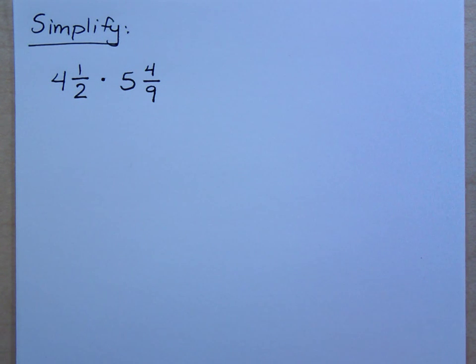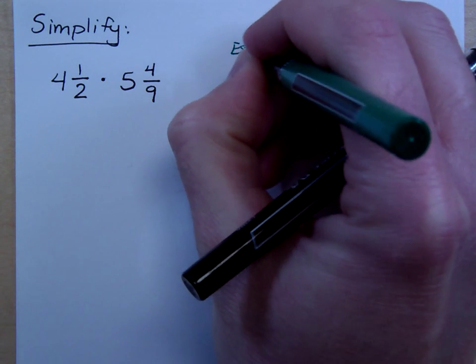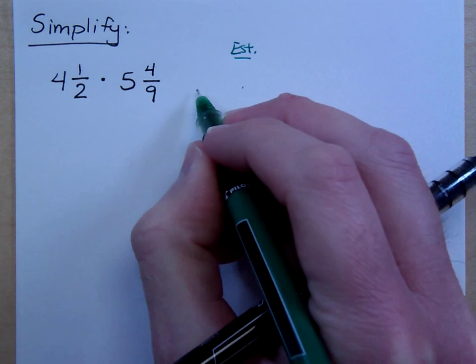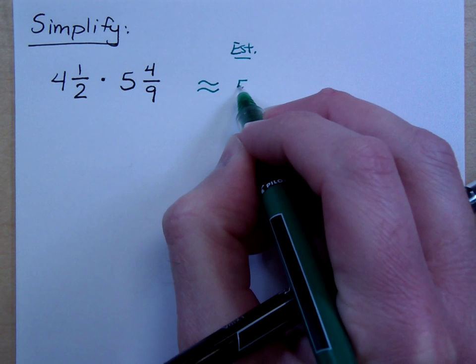Let's talk about multiplying mixed numbers. I know this is exciting to all of you, right? Now, if we were to estimate this, do some rounding, estimating. 4 and a half is about what? That would round to 5, right?